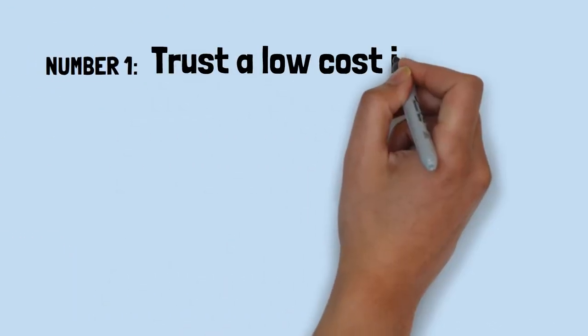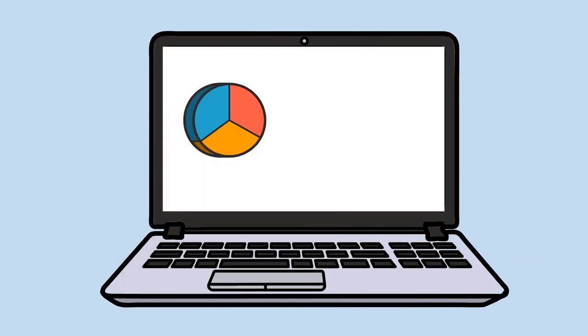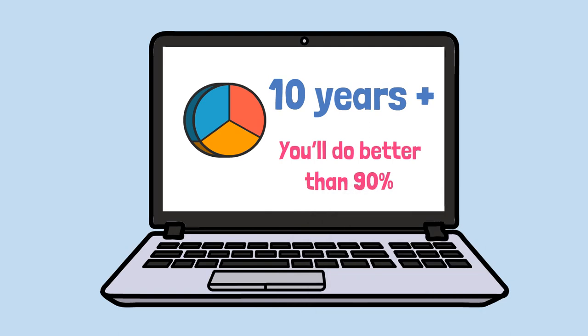Number one. Trust a low-cost index fund. If you invest in a very low-cost index fund, where you don't put the money in at one time, but average in over 10 years, you'll do better than 90% of people who start investing at the same time, Buffett said.